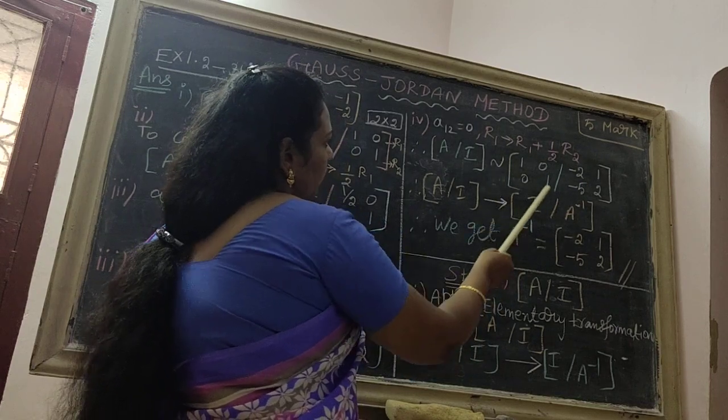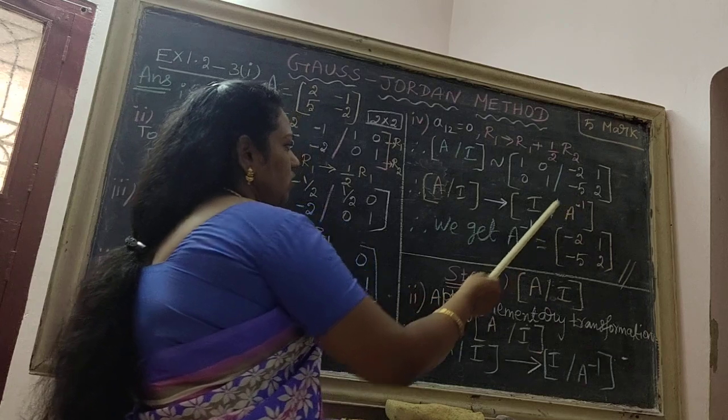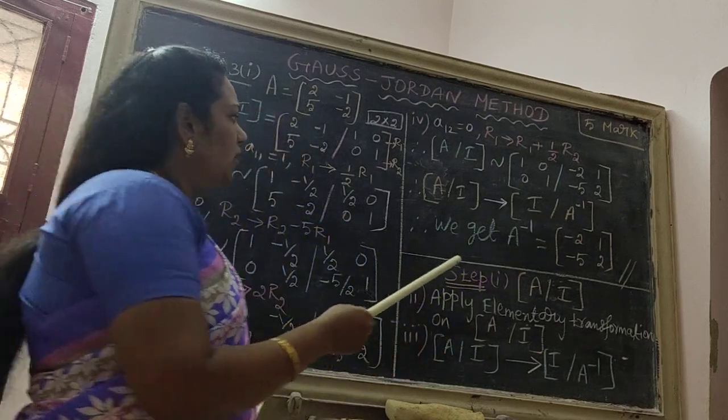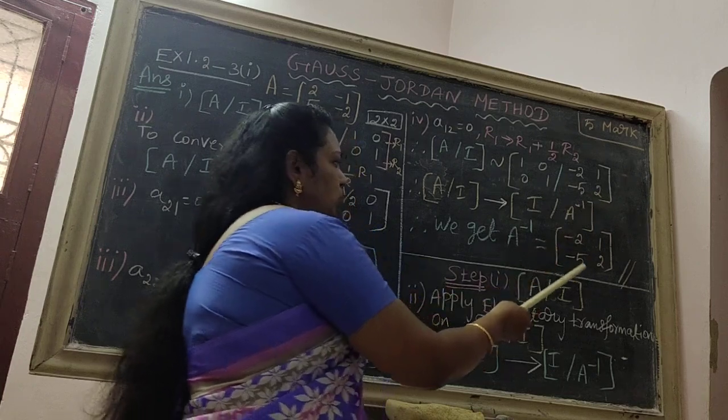Here 1, 0, 0, 1 is i. Here the value is A inverse. Therefore we get the answer A inverse equal to minus 2, 1 minus 5, 2. Clear?